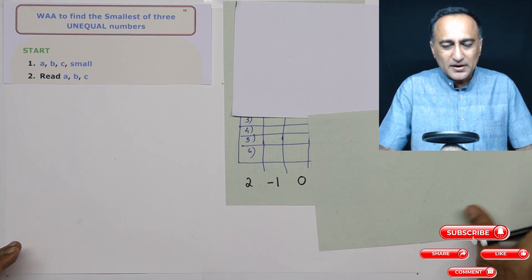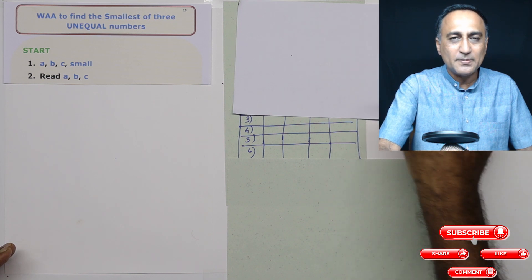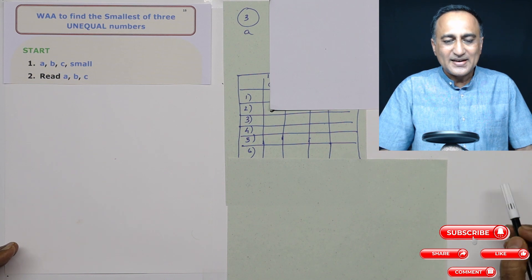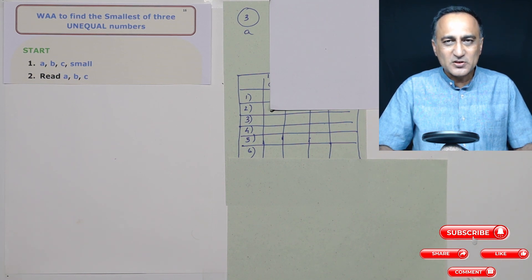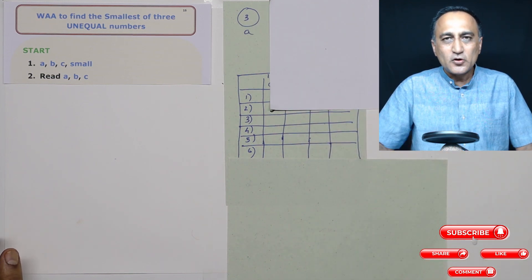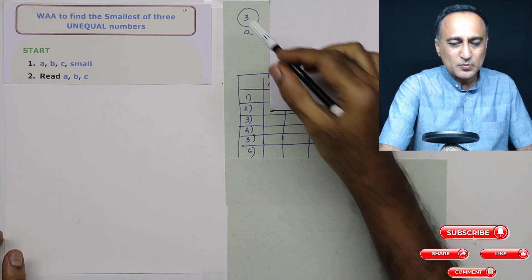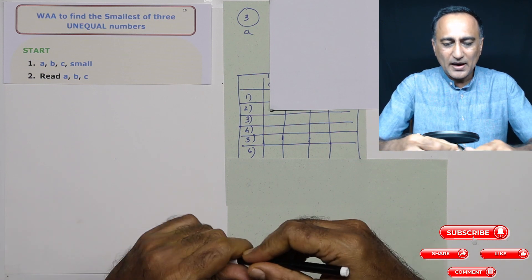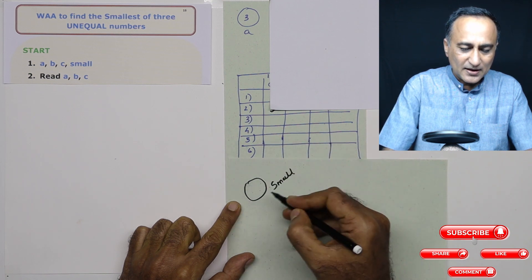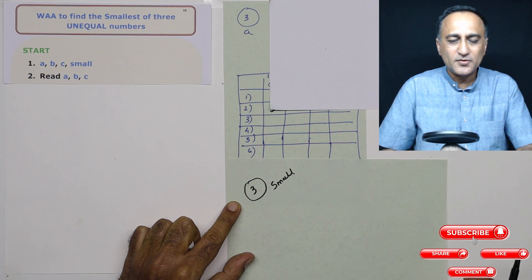Now using this thought process, let us try to develop the logic. Let's say I give the first variable name as a, with value 3. At this point, the smallest number in my mind happens to be 3. So I take a memory location called small and copy the value of a into small. So small is right now 3.